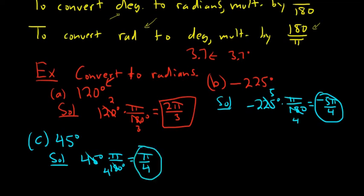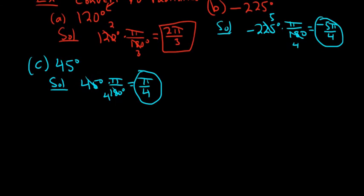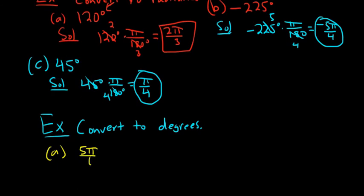Let's go backwards. Let's do a couple examples where we convert to degrees. So convert to degrees. So (a). Say we have 5π over 6. So in this case, to convert this to degrees, we have to get rid of the π, right?